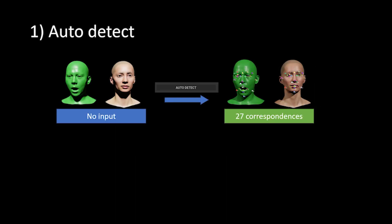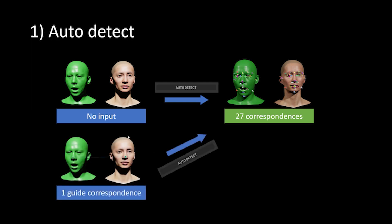In auto detection mode, all you have to do after character setup is just click the auto detect button, and you will get a decent 27 correspondences automatically. Alternatively, when the initial lineup from the character setup is not great, you can add one correspondence and click the auto detect button and you will get the full correspondences.